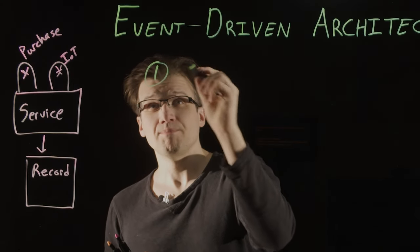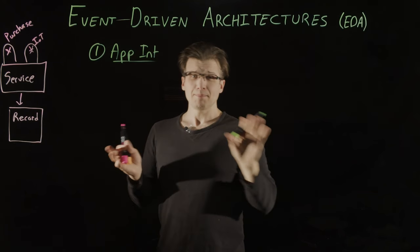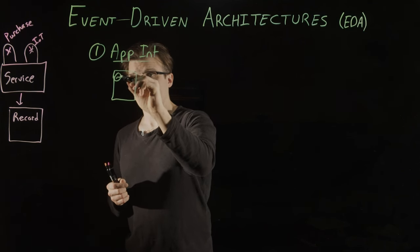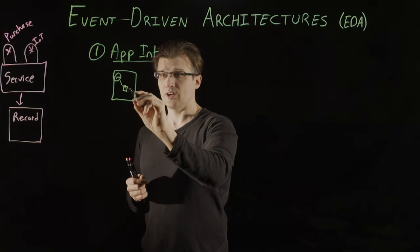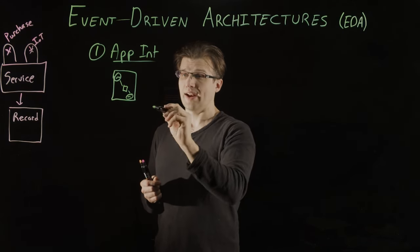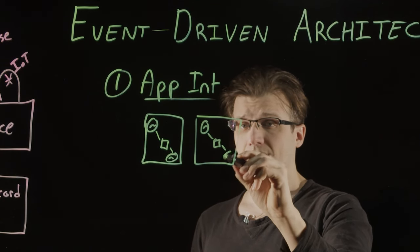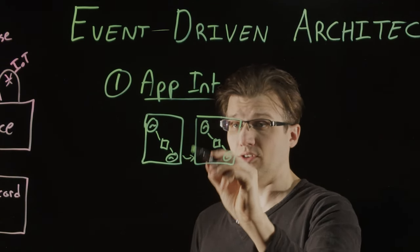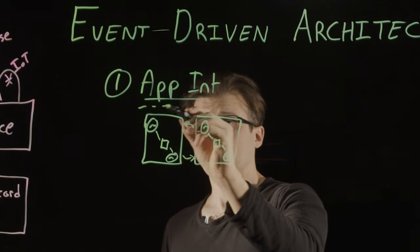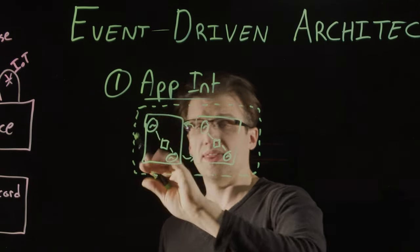The first type we're going to look at is application internal. So application internal means that there's an application, and this application has an internal process that creates records for consumption and processing by another process inside that app. You may have multiple instances of this app, and the records may travel even across networks from one instance to another. But the important thing about this is all of this is completely encapsulated within the application.